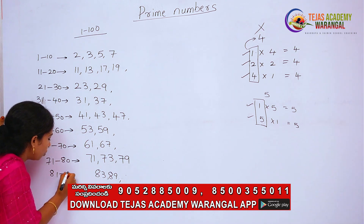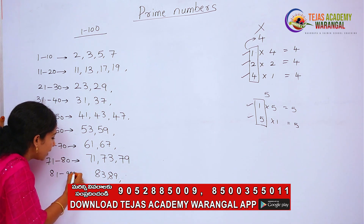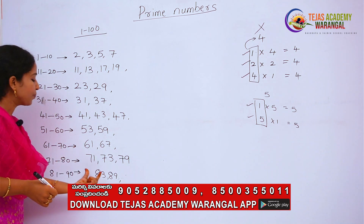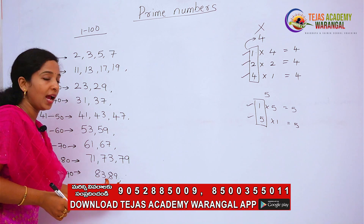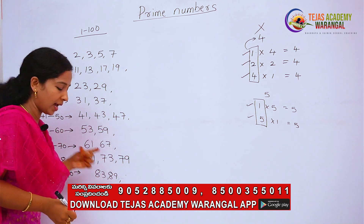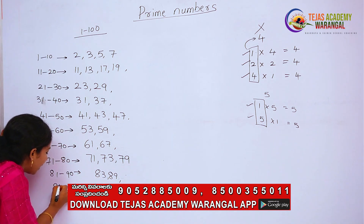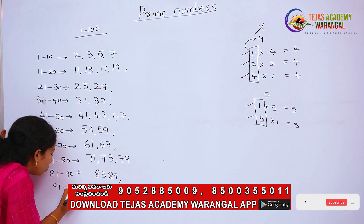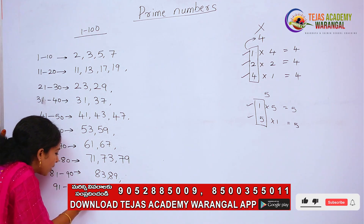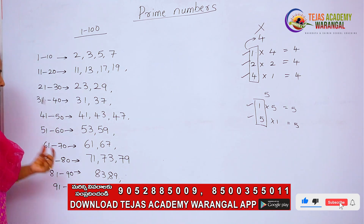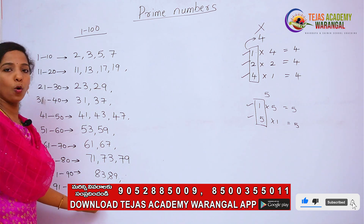From 81 to 90, the prime numbers are 83 and 89. From 91 to 100, the prime number is 97 only.